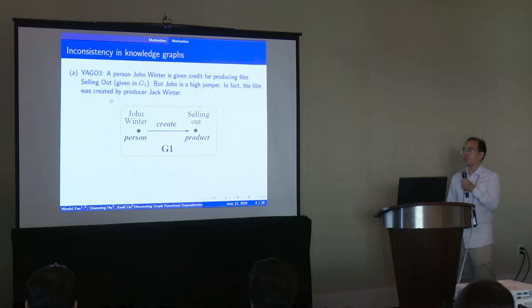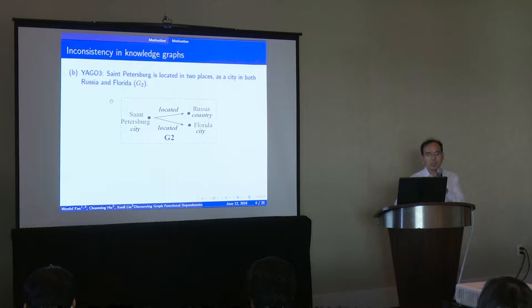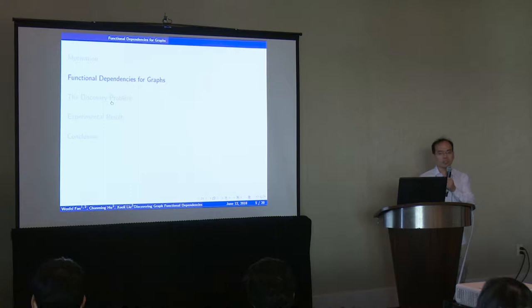Let's consider the following example. A person, John Winter, is given credit for producing film To Sell Out, but John is a high jumper. In fact, the film was created by producer Jack Winter. It is shown in this graph.